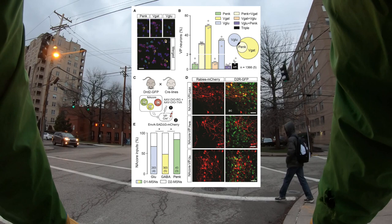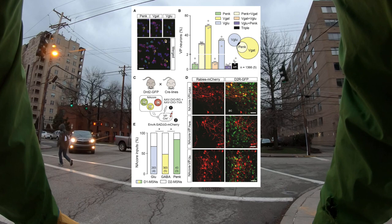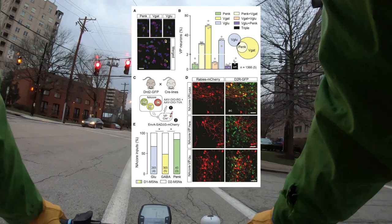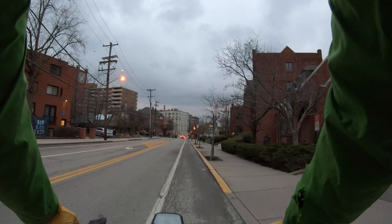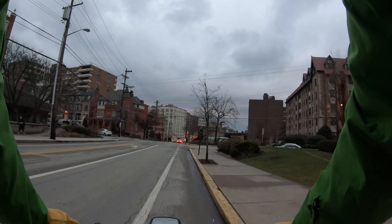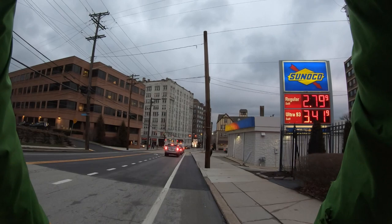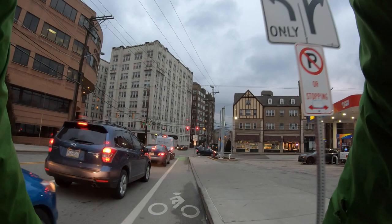They start by showing you the proportion of cells in the ventral pallidum that are glutamatergic, GABAergic, or express proenkephalin. Proenkephalin is a protein that's a good marker for a subset of GABAergic interneurons. In the first figure they show a Venn diagram with GABAergic and glutamatergic cells largely separate, and the PENK — the proenkephalin cells — are a subset inside the GABAergic cells. There's some overlap that they mention, but that's probably due to staining artifacts.